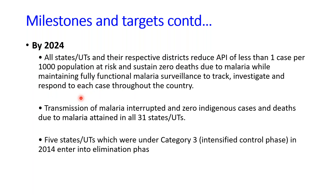Through this program, transmission of malaria is expected to be completely interrupted and zero indigenous cases achieved in all 31 states and union territories. The cases coming from the indigenous population currently residing in India are to be eliminated by 2024.